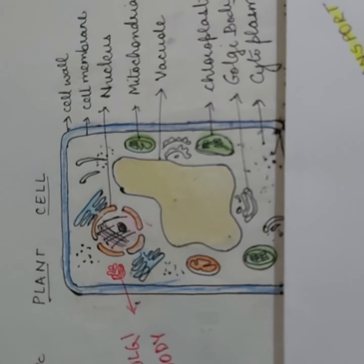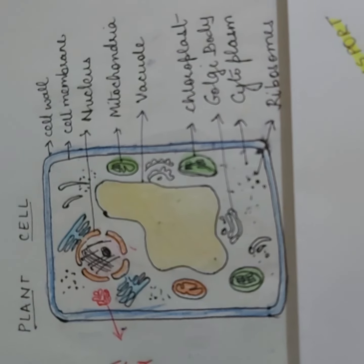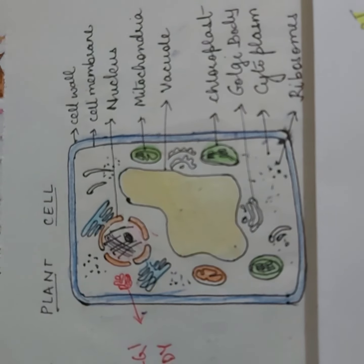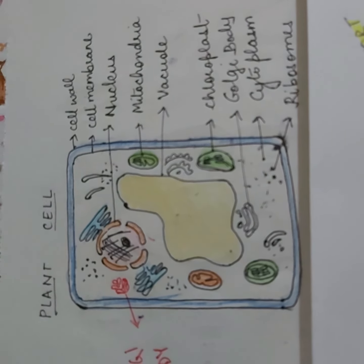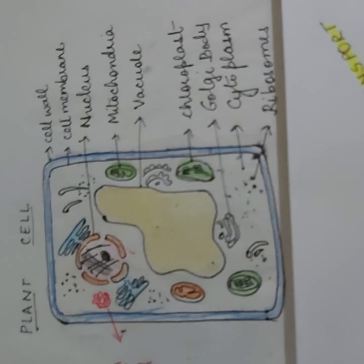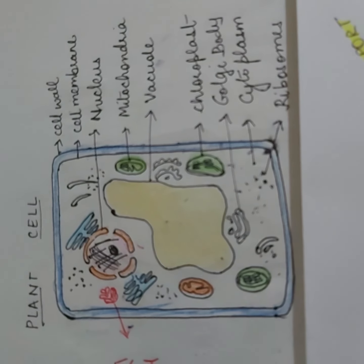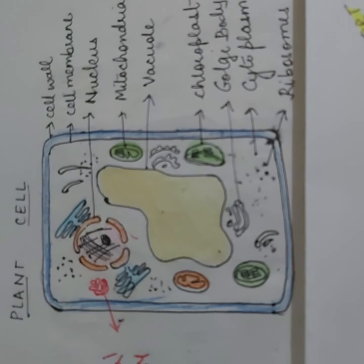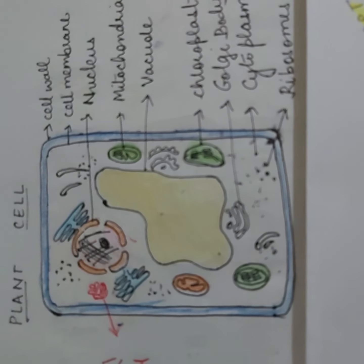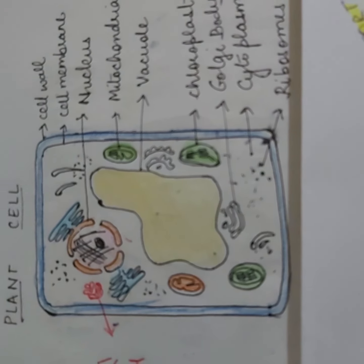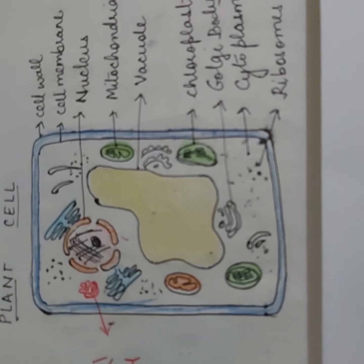The colored plastids are of two types: the green plastids called chloroplasts, and the other colored plastids which impart colors other than green — like red, yellow, and orange — to different flowers, fruits, and other plant parts. These non-green chromoplasts impart vibrant colors that attract insects for pollination and aid in seed dispersal. In your syllabus you are required to study the structure of the green plastid, which is called chloroplast.